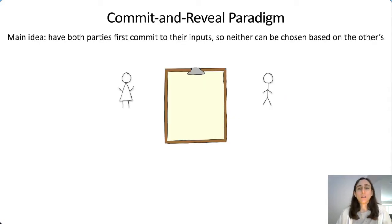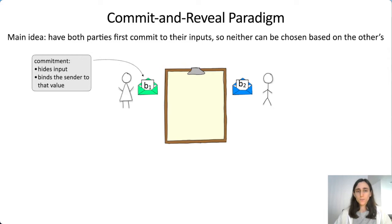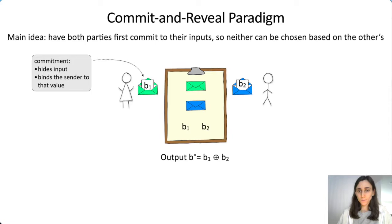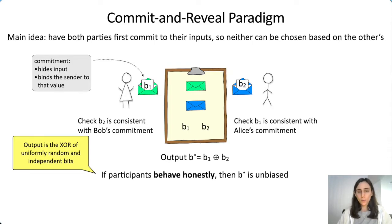One very classical way to do this coin flipping is the commit-and-reveal paradigm. The idea is for each party to hide their input so no party can choose their value based on someone else's. Alice samples B1, Bob samples B2, and they commit to these values. A commitment is the digital analog of a sealed envelope—it hides the inputs and binds the sender to that value. So Alice and Bob post their commitments on the board, then open them and compute the output as the XOR. If everyone behaves honestly, the output is unbiased since it's just the XOR of uniformly random independent bits.